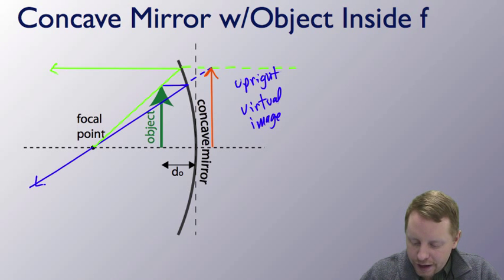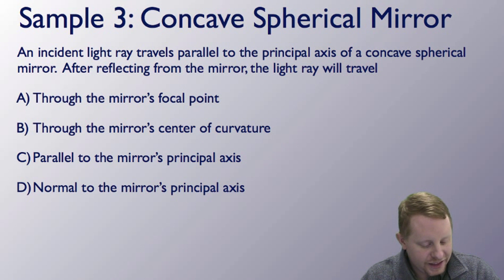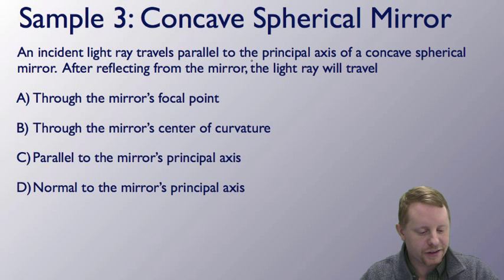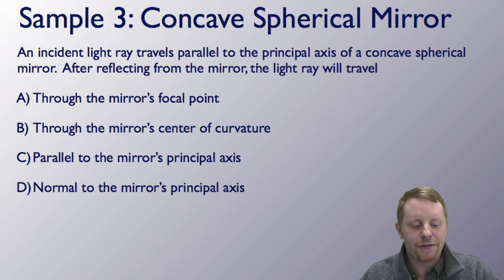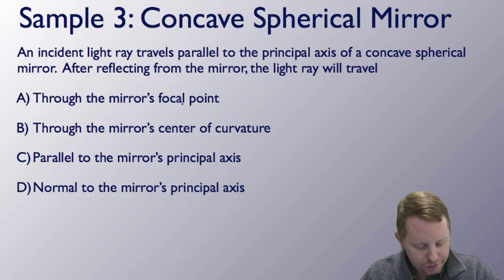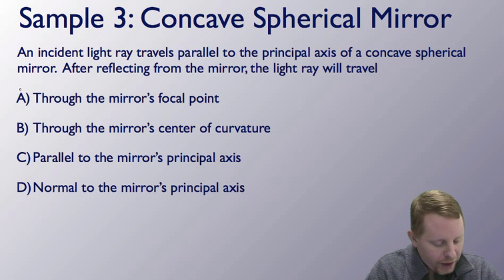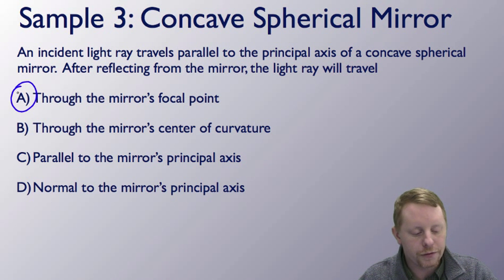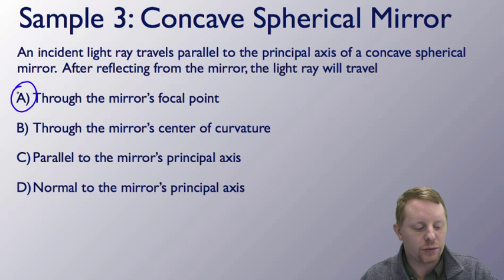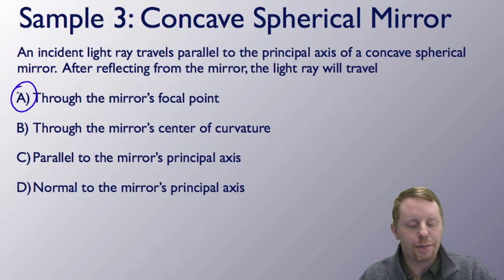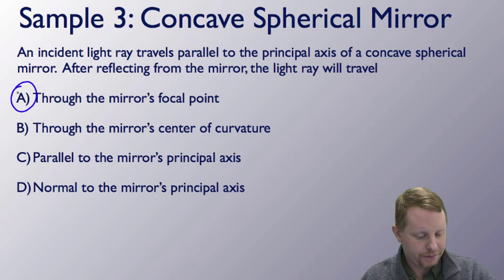An incident light ray travels parallel to the principal axis of a concave spherical mirror. After reflecting from the mirror, the light ray will travel through the mirror's focal point. Absolutely — that's one of our rules for ray tracing: light rays parallel to the principal axis are reflected through the mirror's focal point.